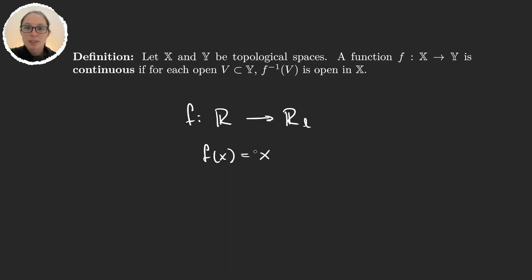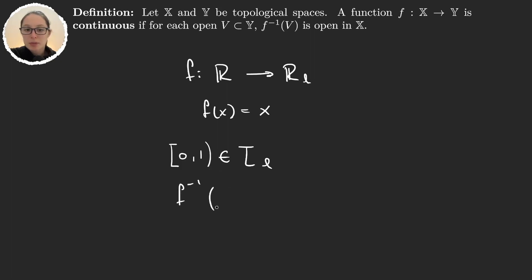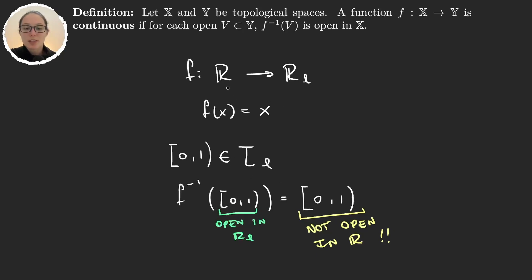To see if this function is continuous, it suffices to check on basis elements. Take the basis element [0,1) in the lower limit topology. The pre-image of [0,1) under the identity is [0,1) itself, which is open in the lower limit topology, but [0,1) is not open in the standard topology. This gives us a function that is not continuous, and that function is the identity. So no, the identity is not always continuous — it depends heavily on the topologies being considered.